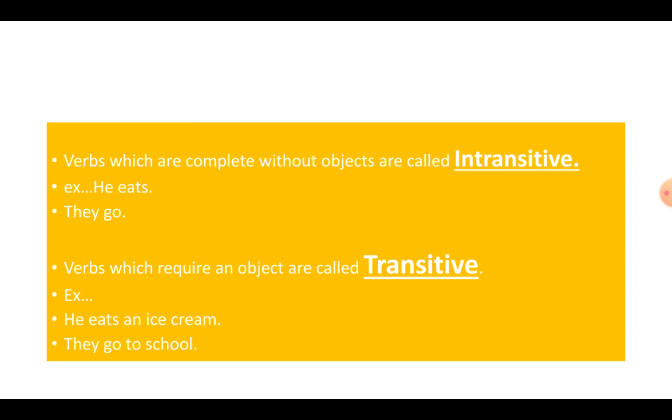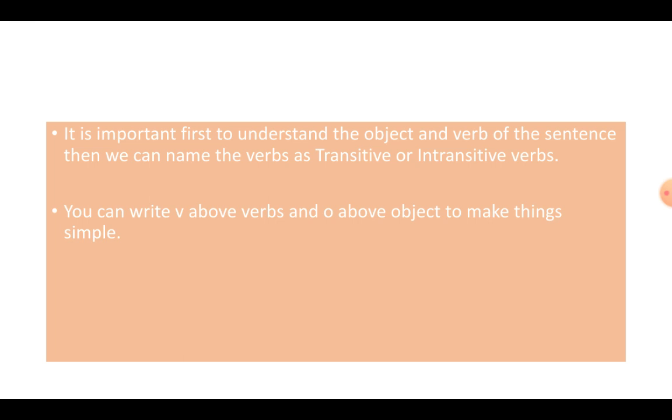Now, what is important here to realize? That first you should mark objects and verbs of the sentences. Then it will be very easy for you to name the verbs, whether they are transitive or intransitive. Now, what you can do for it? Write V above the verbs and O above the objects. Now, you will know. If there is an object, it is transitive verb. If there is no object, it is intransitive verb.